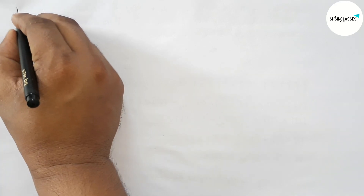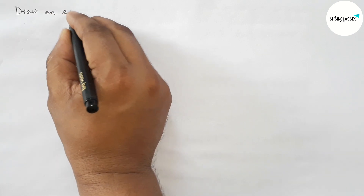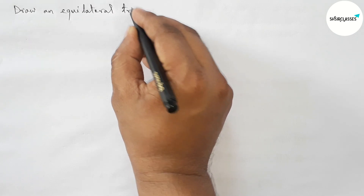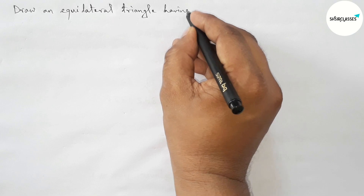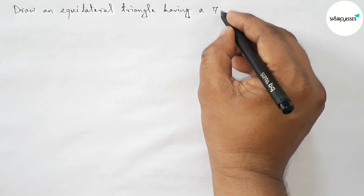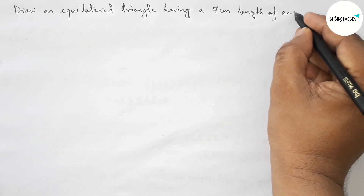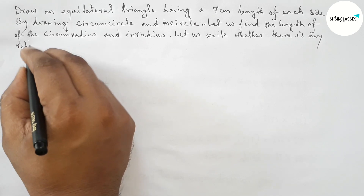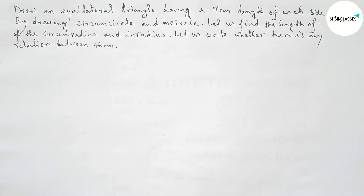Hi everyone, welcome to Essay Share Classes. Today in this video we have to construct a circumcircle and incircle to an equilateral triangle whose each side equals 7 centimeters, then find the length of the circumradius and inradius, and also find the relation between these two radii. Please watch the video till the end. Let's start.